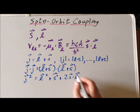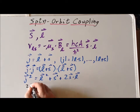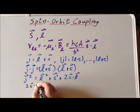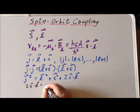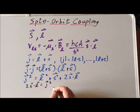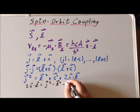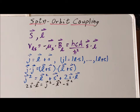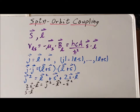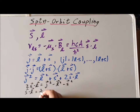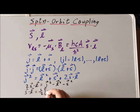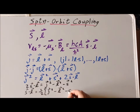Next, by simple algebraic manipulation, we get that two S dot L is equal to the J vector squared minus the L vector squared minus the S vector squared. And then we simply divide through this entire expression by the number two, so that gives us S dot L is equal to one-half times the J vector squared minus the L vector squared minus the S vector squared.